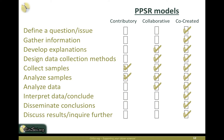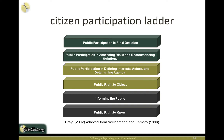Looking at the process of citizen science: in contributory models, participants — whether students in high school biology or a citizen science program at a nature center — focus mainly on collecting and analyzing data. In collaborative models, participants are more involved in more steps of the research process, including developing explanations and questions. In co-created models, the question comes from the community itself, such as a group concerned about a local water quality issue.